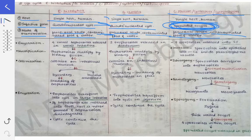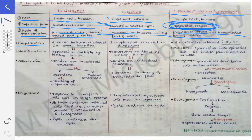Now coming to the life cycle proper. The first point is excystation. What is excystation? Whenever the cyst is ingested — since the infective form is the quadrinucleated cyst — that quadrinucleated cyst gets ingested. The cyst has a cyst wall which must be removed for the contents to come out into the intestinal lumen. When that cyst wall is removed and the contents come out into the lumen, that is called excystation.